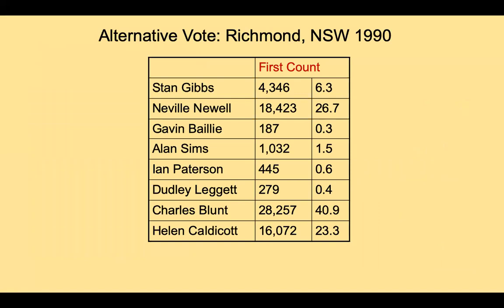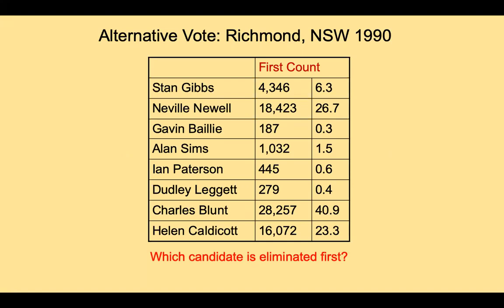Let's look at how an alternative vote works in practice. This is New South Wales in the District of Richmond in Australia in 1990 — the first count in this race. We have a list of candidates, their vote totals, and the proportion of the vote each received. Remember we're paying attention to whether or not any of the candidates won an absolute majority. You'll notice that no one won an absolute majority. So we ask ourselves: which candidate is eliminated first?